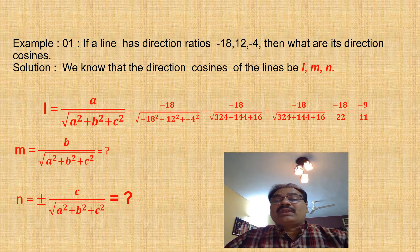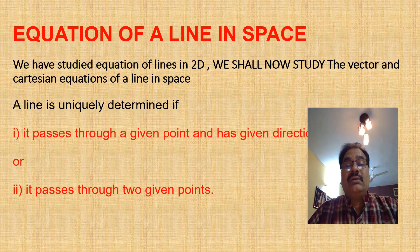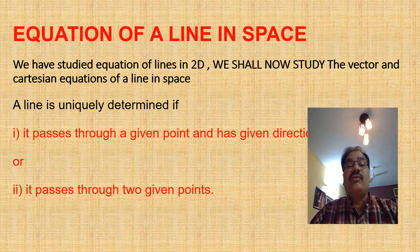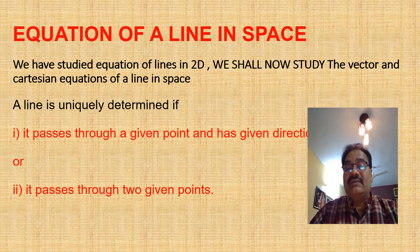Now we have to study the equation of a line in space. We have studied the equation of a line in 2D. We shall now study the vector and Cartesian equations of a line in space. A line is uniquely determined if it passes through a given point and has a given direction, or if it passes through two given points.